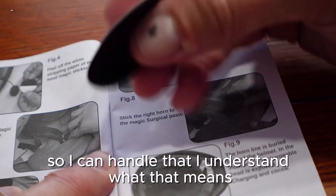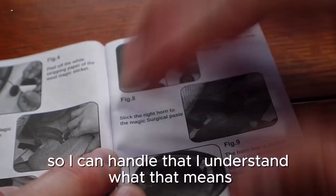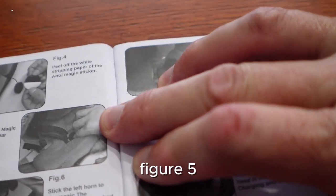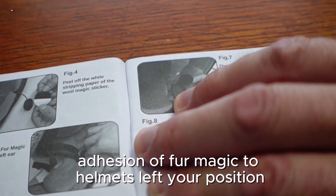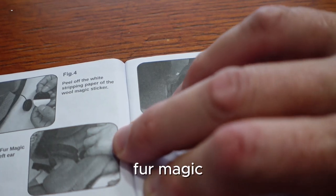Okay, all right, I can handle that. I understand what that means. Figure five: adhesion of fur magic to helmet's left ear position. Fur magic? I don't know what fur magic is.